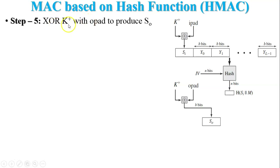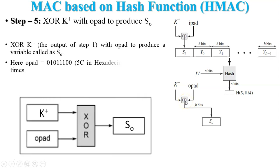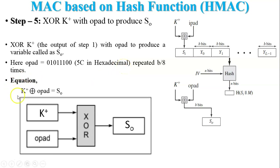Step 5: calculate the second secret value So by XOR-ing K+ with opad. K+ is as determined in Step 1, and So is calculated from K+ XOR opad. The value of opad is 0x5C in hexadecimal, as given in the algorithm. Our equation is: K+ XOR opad = So.